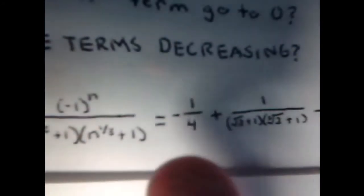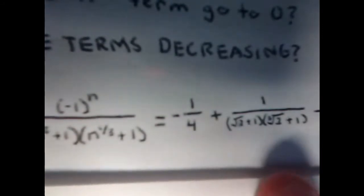For condition one, we look at the limit as n approaches infinity of our sequence. When you plug in n equals one, you get negative one-fourth, and the sequence continues alternating — going to one divided by the square root of two plus one, times the cube root of two plus one — eventually reaching one divided by infinity, which is zero. It decreases fast enough that it looks like it is going to, in fact, converge.